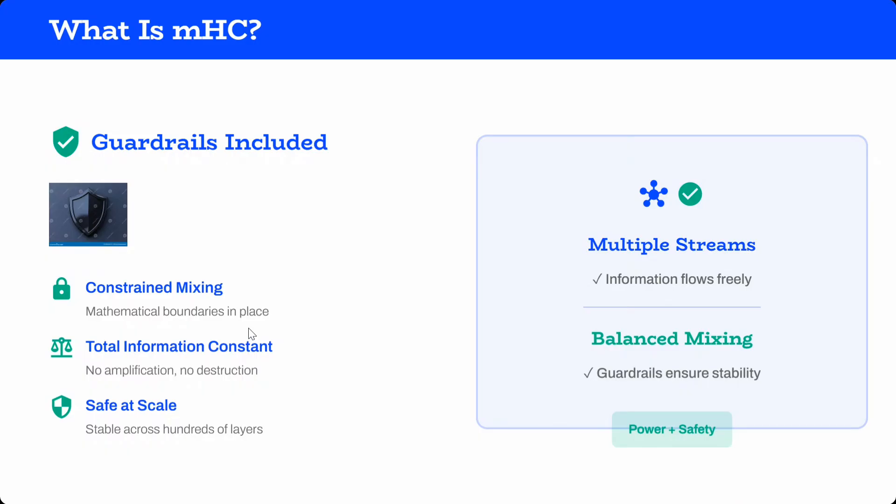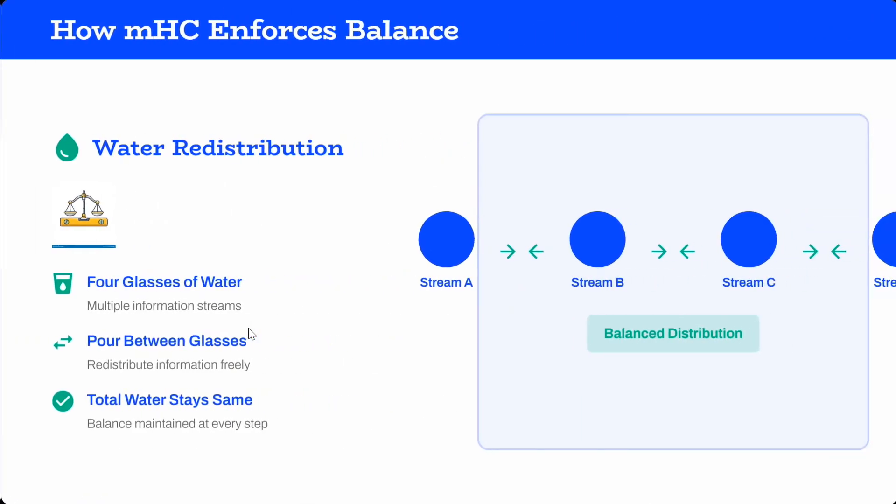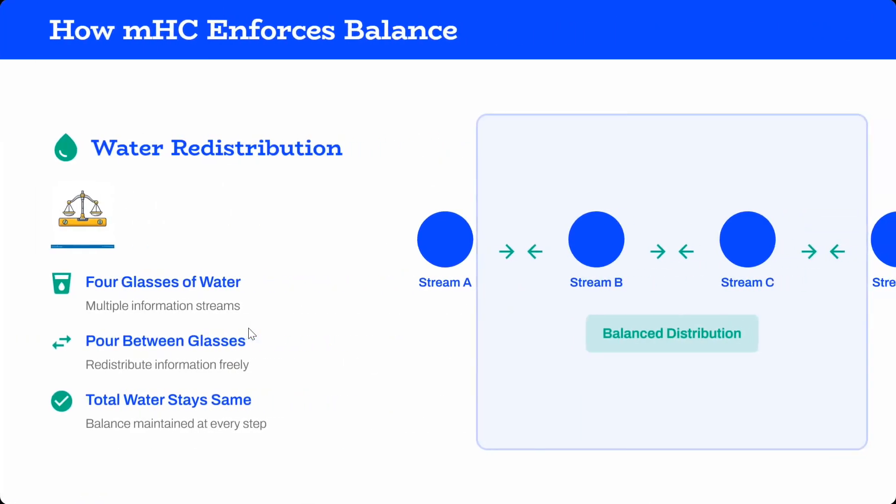Water distribution example: four glasses of water. Assume you can pour from one glass to another to do any sort of calculations, but the amount of water remains the same - the upper and lower bound remains the same for the addition that is happening.